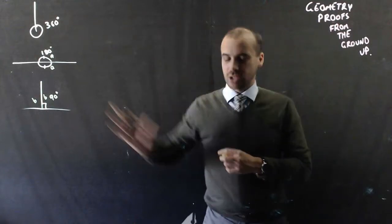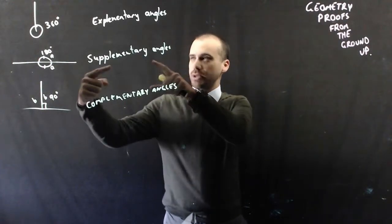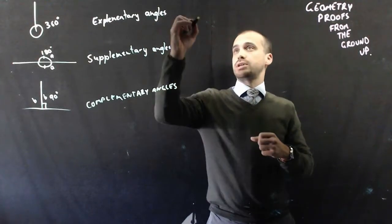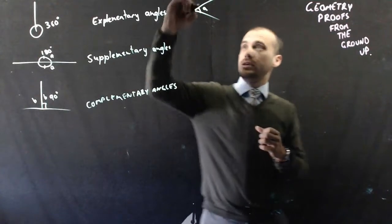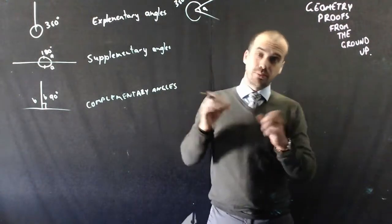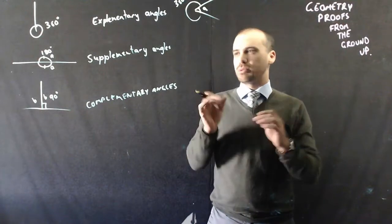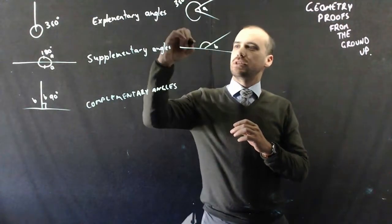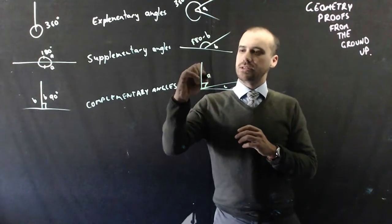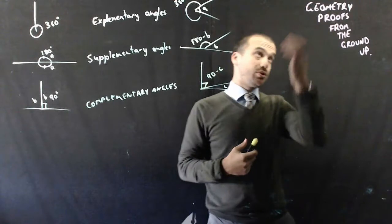We have some neat ideas we can summarize as follows. Three neat ideas — working from the bottom: complementary angles, supplementary angles, and exclementary angles. You've probably never heard that last phrase before. Working from the top: exclementary angles — if this angle is A, then the other must be 360 minus A. Supplementary angle B is going to be 180 minus B. And if that's a right angle and this is angle C, then the remaining angle is 90 minus C. These ideas are useful tools for geometric proofs.